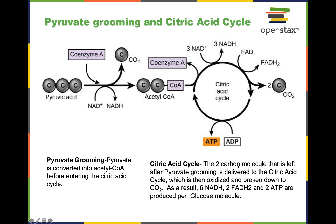During the citric acid cycle, the two-carbon molecule is going to be broken down into CO2. The numbers shown are twice as many because they're calculated per glucose molecule. We get two pyruvic acid from one glucose, so if during one cycle for one acetyl-CoA we get three NADH, one FADH2, two CO2, and one ATP, per glucose molecule you need to double those numbers.